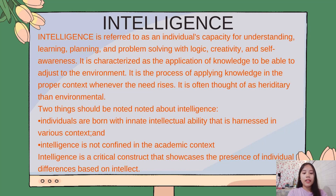Intelligence is defined in a number of ways. The term is referred to as an individual's capacity for understanding, learning, planning, and problem-solving with logic, creativity, and self-awareness. It is characterized as the application of knowledge to be able to adjust to the environment — the process of applying knowledge in the proper context whenever the need arises. Intelligence is often thought of as hereditary rather than environmental. Two things should be noted about intelligence: individuals are born with innate intellectual ability that is harnessed in various contexts, and intelligence is not confined to the academic context. Intelligence is a critical construct that showcases the presence of individual differences based on intellect. A number of theories have already been presented regarding intelligence. Howard Gardner's theory of multiple intelligences proposes eight areas of human intelligence.